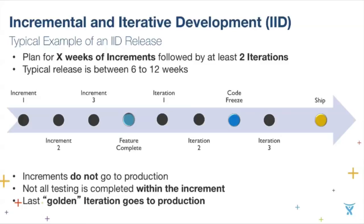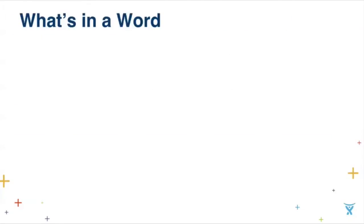The key features of IID are that increments do not go to production, not all testing is completed within the increment or iteration, and only the last golden iteration goes to production. You might look at this and say it sort of sounds like agile — but it's actually not, and I'm not just playing semantics. Semantics is what sometimes gets people in trouble, so let's talk about what's in a word.